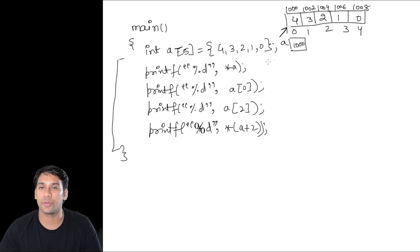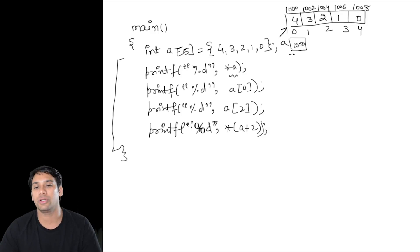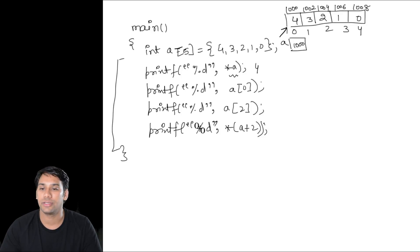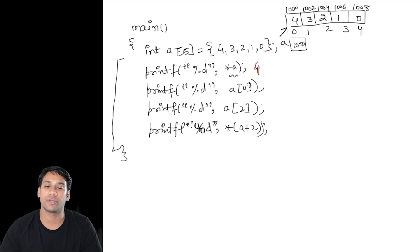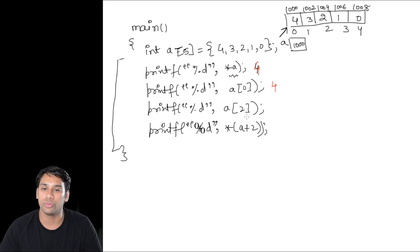Now if you execute this program, what will be the output? In the first statement I am printing the value which is stored at the location pointed by a, therefore it will print 4. In the second statement I am printing the value stored at index location 0, therefore it is also going to print 4. In the third statement I am printing the value stored at index location 2, therefore it is going to print 2.